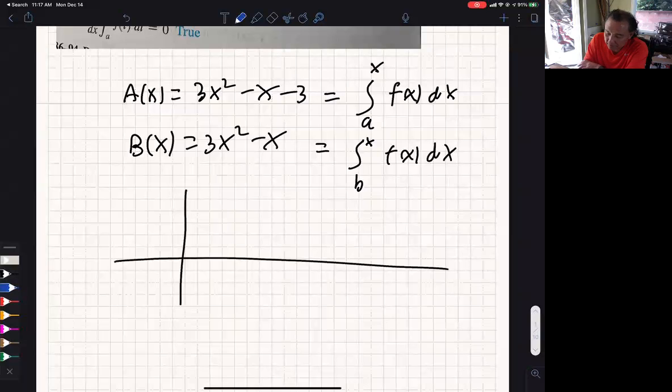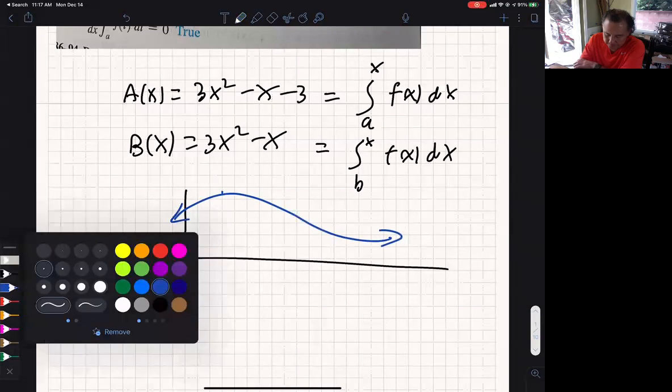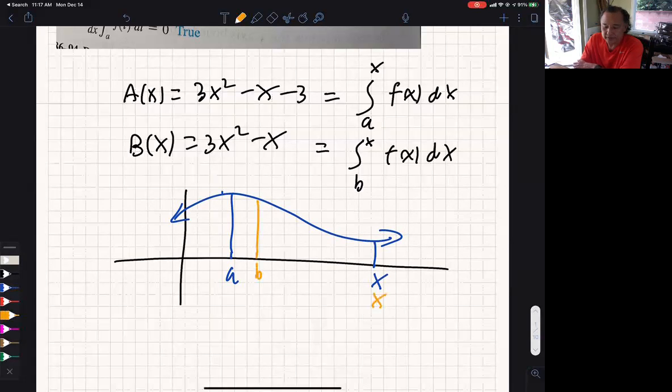So if I have a function f(x) and say it just looks like this. And then if I want the area, I'll say from A to x as opposed to from B to x. Here's my point. From here to here, they're both the same. The area function, it would be the same for both of those.